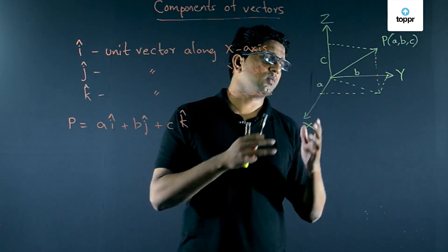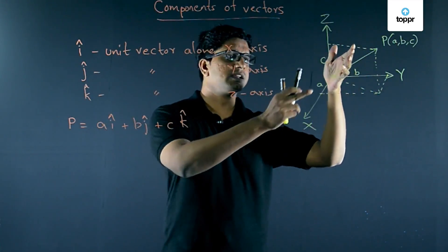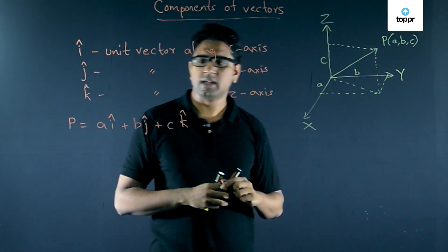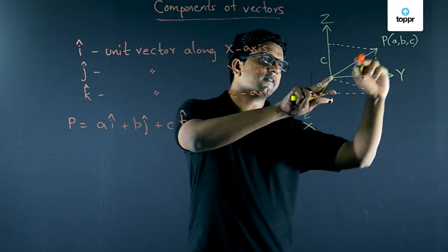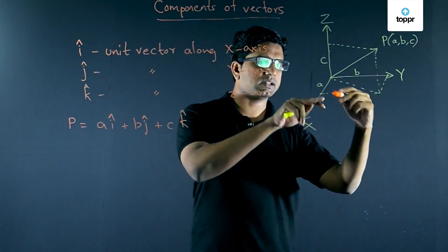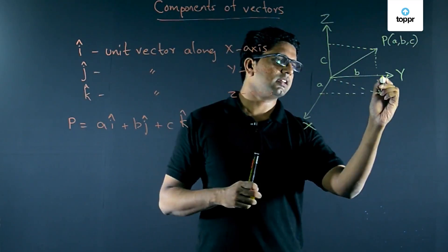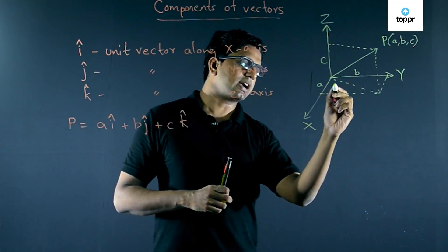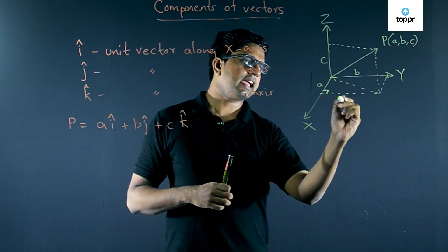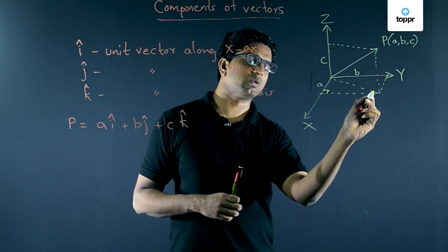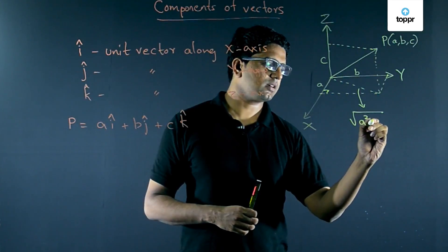We can also find the length of this vector using its components. Looking at the figure, when we take the projection of this vector on the xy-plane, we get a right triangle with sides a and b. By the Pythagorean theorem, the length of that projected side is √(a² + b²).